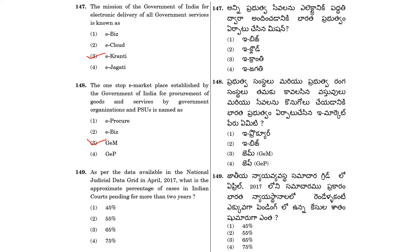Question 149: As per the data available in the National Judicial Data Grid in April 2017, what is the approximate percentage of cases in Indian courts pending for more than 2 years? There are approximately 55% of cases pending for more than 2 years. So 149, the answer is 55%.